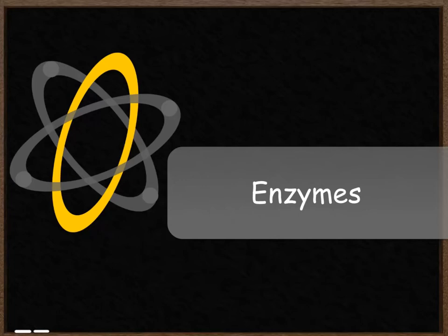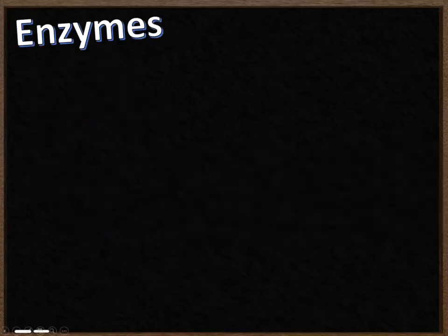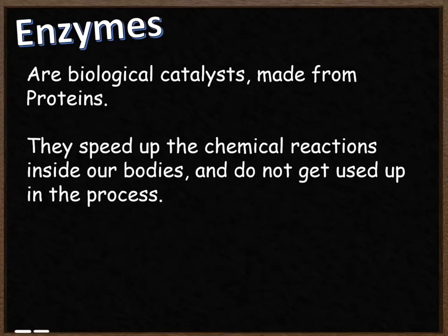In this video we're going to look at enzymes and the factors that can affect them. Firstly, we're going to take a look at what an enzyme actually is and what it does. They are biological catalysts and they're made from proteins — chemicals inside an organism's body that speed up chemical reactions. Crucially, they don't get used up in that process, therefore they can be used again to speed up the reaction further.